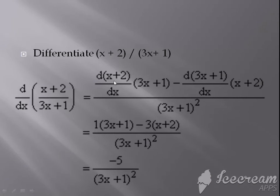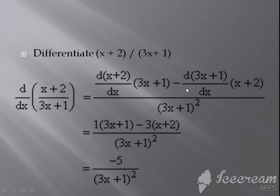Now differentiating (x + 2): x gives 1 and 2 gives 0, so the result is 1. So we get 1 times (3x + 1). Then differentiating (3x + 1): 3 is a constant so it remains, x gives 1, giving 3. So we have (3x + 1) minus 3 times (x + 2), all divided by (3x + 1) whole square. Solving this gives minus 5 divided by (3x + 1) whole square. This is how you apply the quotient rule in differentiation.